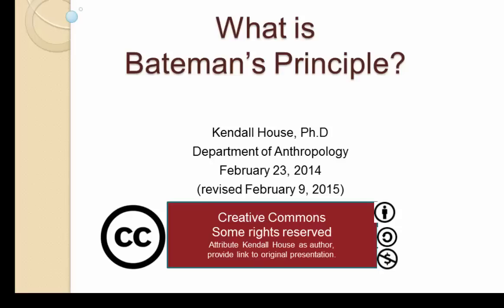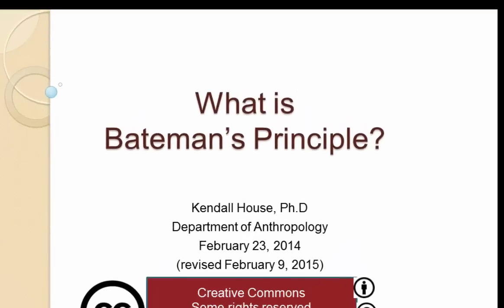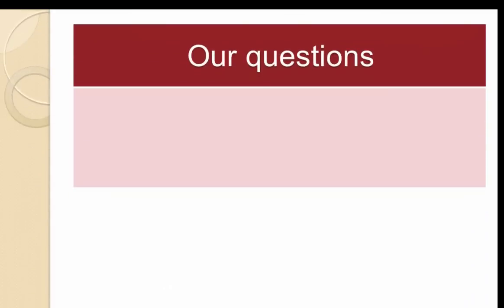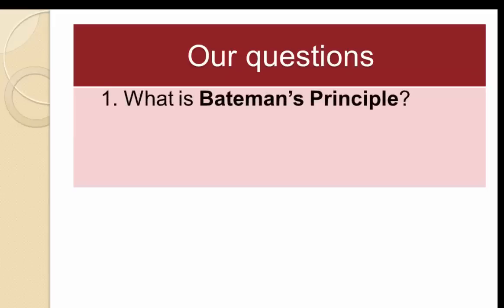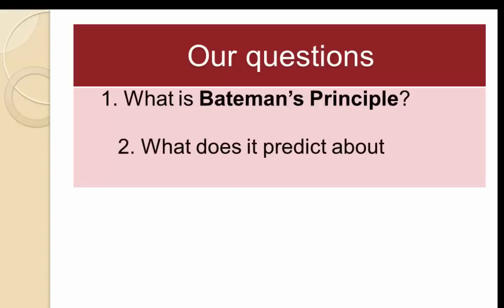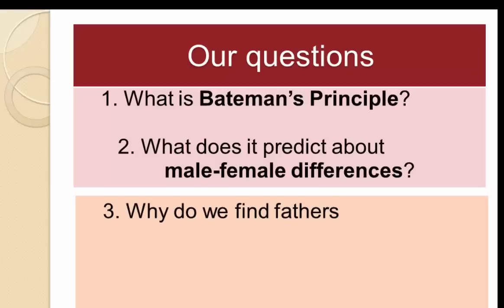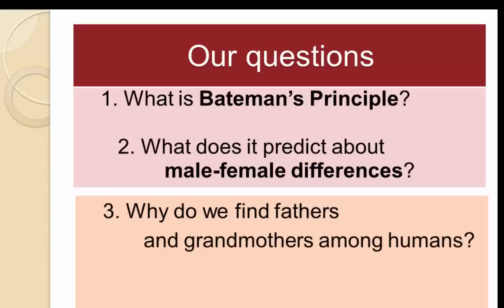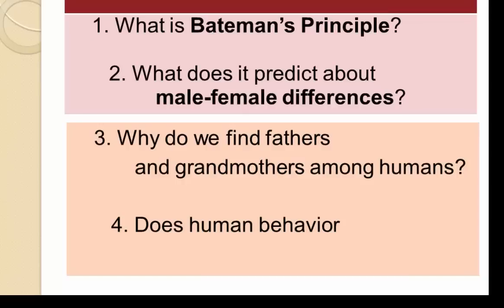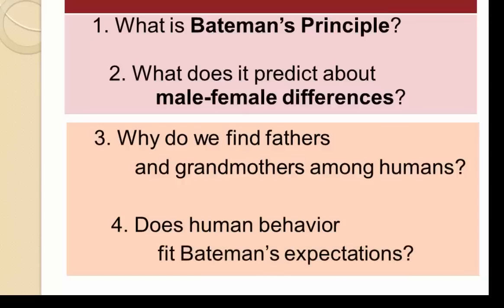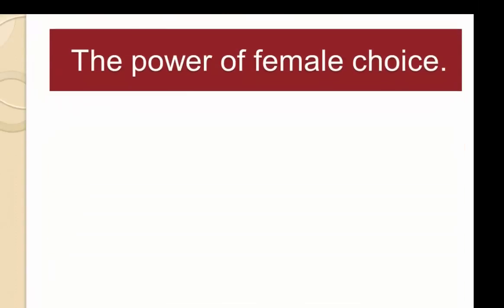This presentation is called 'What is Bateman's Principle?' We're going to answer four questions: what is Bateman's principle, what does it predict about male-female differences in reproductive strategies, why do we find fathers and grandmothers among humans — which turn out to be evolutionary novelties not found among the other African apes — and fourth, does human behavior fit Bateman's expectations?